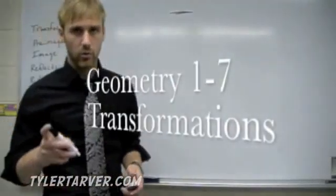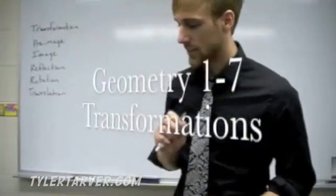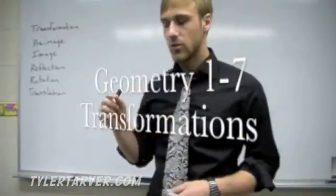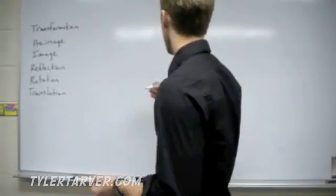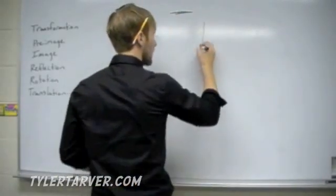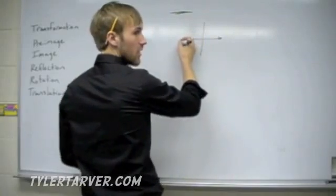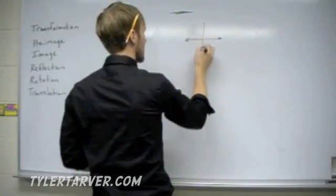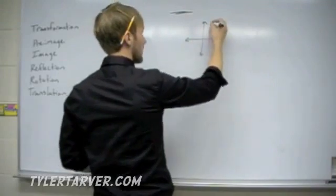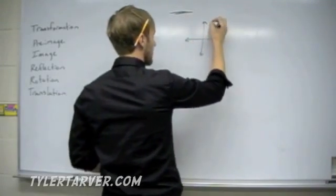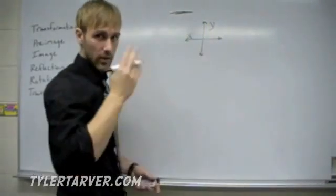Hello, today we're doing Geometry Chapter 1, Lesson 7: Transformations in a Coordinate Plane. A coordinate plane looks like this — you have your y-axis and your x-axis. Y goes up and down, X goes side to side.